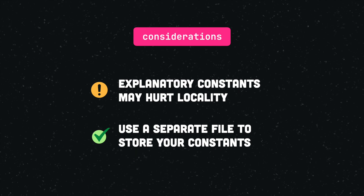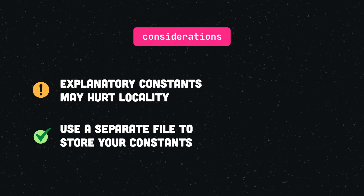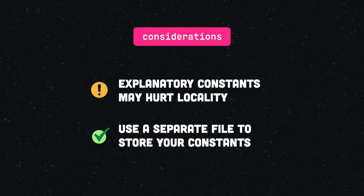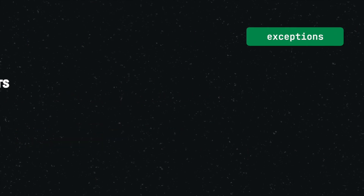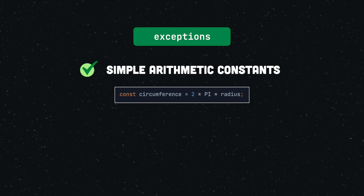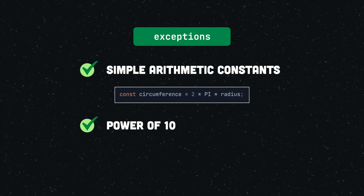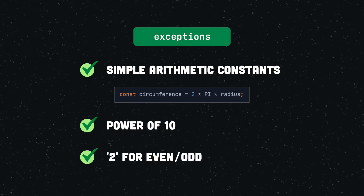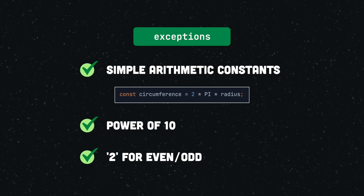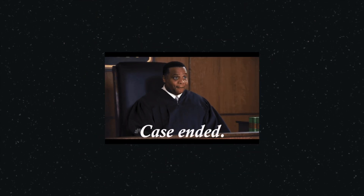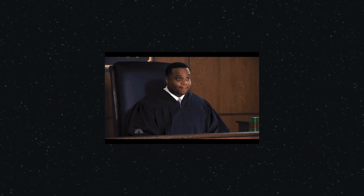So, should you always define a variable for each number? Well, no. In some contexts, the use of unnamed numerical constants is generally accepted. While such acceptance is subjective and often depends on individual coding habits, the following are common examples: the use of exponents or simple arithmetic constants in mathematical expressions, the use of powers of 10 to convert metric values, and the use of 2 to check whether a number is even or odd. This list is by no means final. In the end, you are to judge whether the use of explanatory constants makes your code more manageable and easier to understand, because that is the end goal.